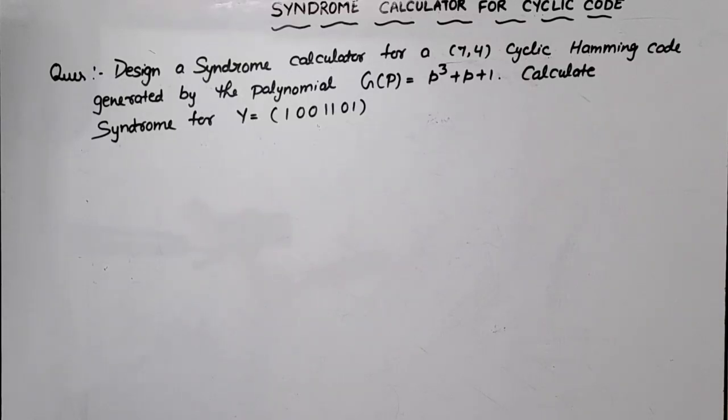Hello everyone, in this video lecture of Information Theory Coding or Digital Communication, I am going to discuss one example of Syndrome Calculator for Cyclic Code. I have taken this question from the Information Theory Coding of AKTU 2020-2021 session. The question is: design a Syndrome Calculator for a (7,4) cyclic Hamming code generated by the polynomial G(P) = P³ + P + 1. Calculate Syndrome for Y.